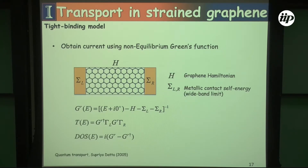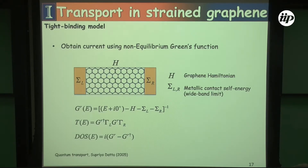We use Green's functions. The main thing worth noting is about the contact: we assume it's wide bandwidth, meaning the density of states within the contact is constant as a function of energy. All of the rest is pretty standard Green's functions.